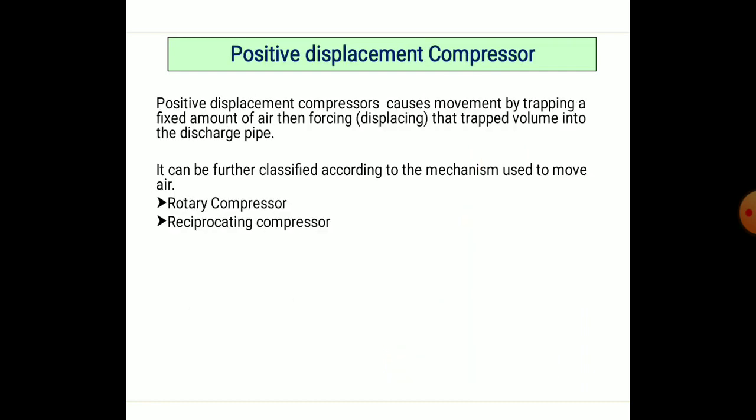A positive displacement compressor works by trapping a fixed amount of air and then forcing or displacing it into the discharge pipe at a reduced volume. It can be further classified according to the mechanism used for moving the air. Rotary compressors and reciprocating compressors are the two main types that achieve this work.